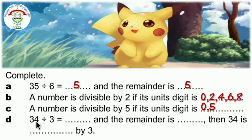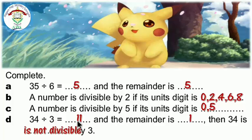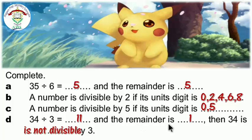34 divided by 3: we know 34 is not in the times table of 3, so find the closest number to 34 in the times table of 3. You will find 33. 33 divided by 3 equals 11, so the quotient is 11. 11 times 3 equals 33, but we have 34, so 34 minus 33 equals 1. The quotient is 11 and the remainder is 1.